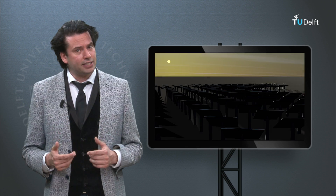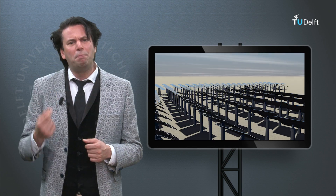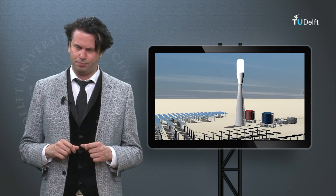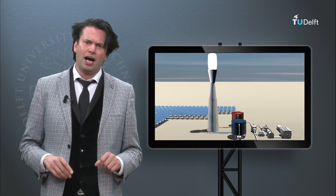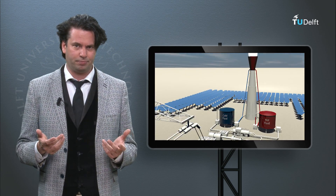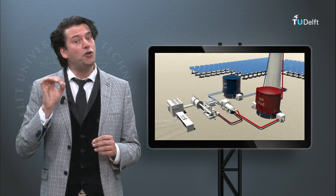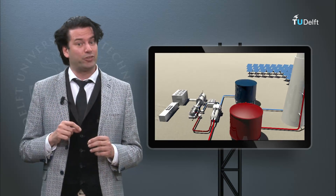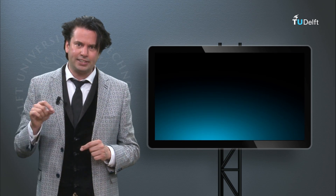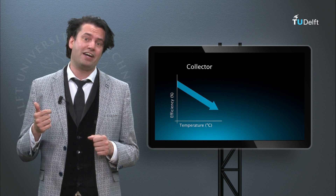In week 6 the future generation concepts are discussed, which are supposed to beat the Shockley-Queisser efficiency limit of a single junction solar cell. Secondly, I will introduce you to solar heat and concentrated solar power technology. Finally, we will talk about the solar fuel technology. Photo-electrochemical approaches will be discussed. After week 6 we will have the second exam moment, covering weeks 4, 5 and 6.